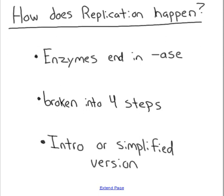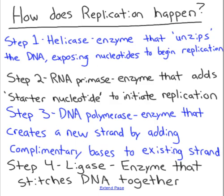The last thing I'm going to explain in this video is the how — how does DNA replication happen. First, this whole process is going to be done with enzymes. Enzymes almost always end in '-ase,' so when you see a word ending in A-S-E, that means it's an enzyme. We're going to break this down into four steps, but this is going to be an oversimplified version of DNA replication. If you go into an IB class or a college class, this is not going to be the full picture — this is just an intro.